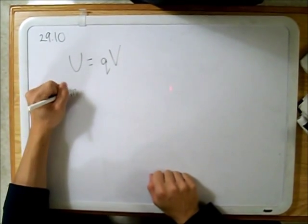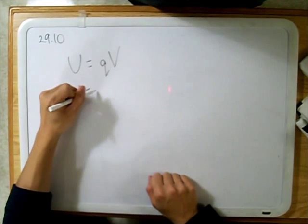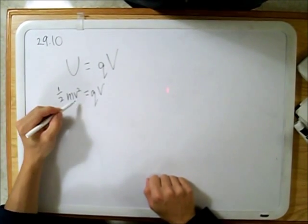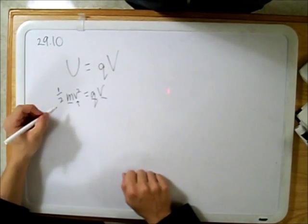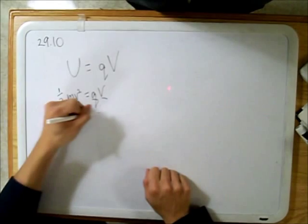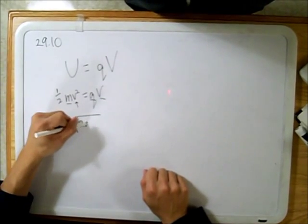We have one half mv squared equals q times V, and what we're looking for is v. We have our mass of electron, our charge of electron, and the potential difference. So we just set it up: v equals square root of 2qV over m.